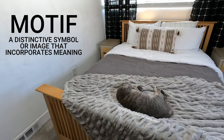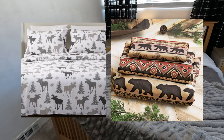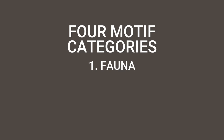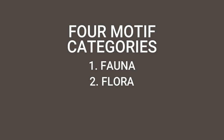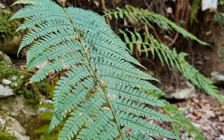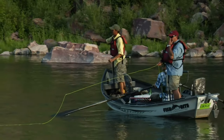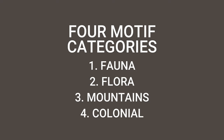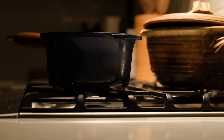Step four: motif. A motif is a distinctive symbol or image that incorporates meaning into your design. You might see this on wall art, in styling knick-knacks, or common to mountain aesthetic, in flannel bedsheets. There are four broad categories: first is fauna — bears, deer, moose, elk, or birds. Second is flora — pine trees, pine cones, acorns, wildflowers, or ferns. Third is mountains, either landscapes or anything related to outdoor activities like hiking, fishing, camping, or skiing. And fourth is colonial — lanterns, axes, antlers, campfires, and particularly anything made of cast iron.